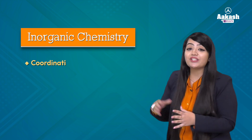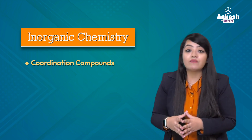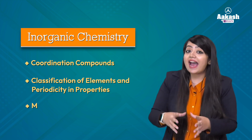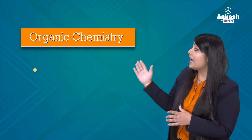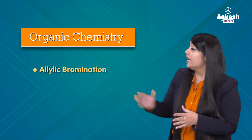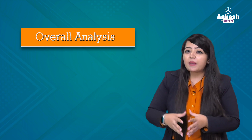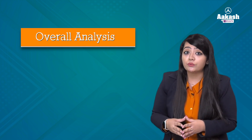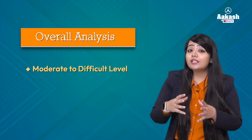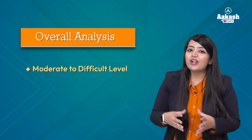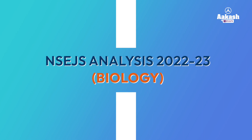In inorganic chemistry, there were questions from coordination chemistry, periodic classification, and metallurgy. For organic chemistry, three questions were there — one from allylic bromination and a moderate question on degree of unsaturation. Overall, the chemistry paper in NSCJS 2022 ranged from moderate to difficult level, and students must have found it a bit challenging.